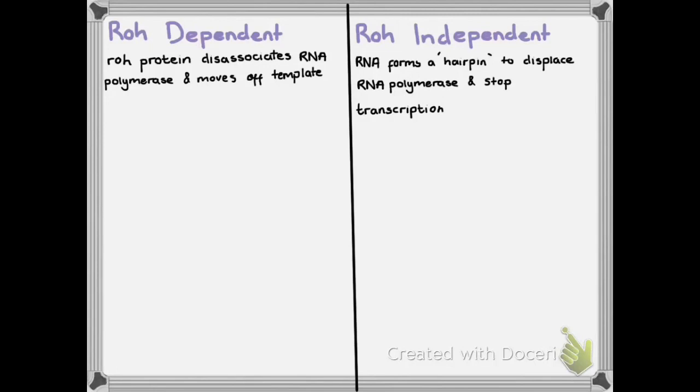Last but not least for this video, I just want to talk briefly about some things that can occur in termination. There can be two types, which is rho-dependent or rho-independent. Rho-dependent involves a rho protein which disassociates the RNA polymerase and then allows the RNA template to move off. Whereas, rho-independent is when the new RNA forms a hairpin to displace the RNA polymerase and then stops the transcription.